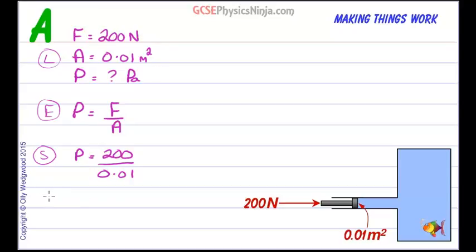And finally let's state the answer. What do we get? Well 200 divided by 0.01 that's like multiplying by 100. So we're going to get 20,000 and state the answer.